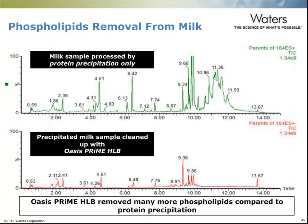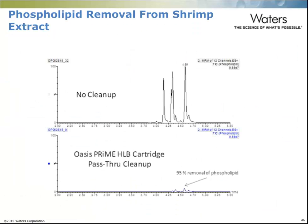Looking at phospholipid removal from milk samples: the top chromatogram shows the milk sample after protein precipitation only, with a very high amount of phospholipids remaining. After passing through the Oasis Prime, the bottom chromatogram shows most phospholipids have been removed. For shrimp extract, similarly, there are three major phospholipid peaks, and after cleanup by Prime HLB, almost 95% have been removed.